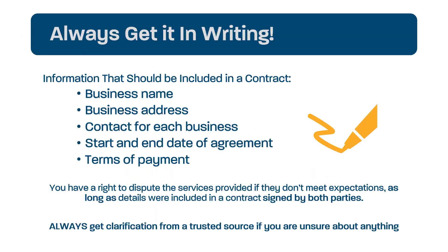Whenever you enter an agreement with another entity, make sure that the contract includes the business name, the business's physical and mailing address if they differ, a contact person for each business including phone number and email, the start and end date of the agreement, and the terms of payment including the amount, date it's due, and the form of payment accepted.